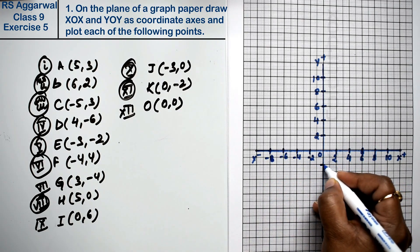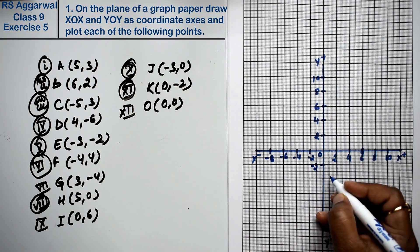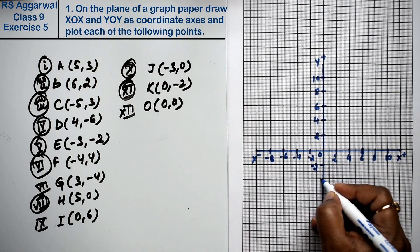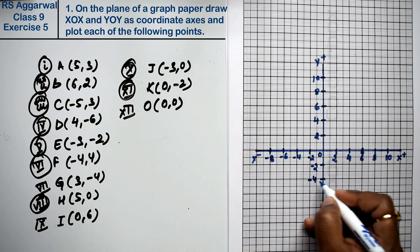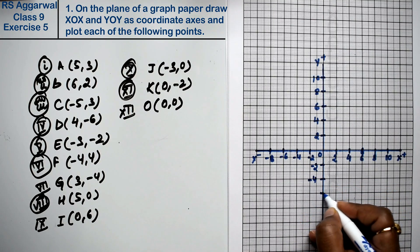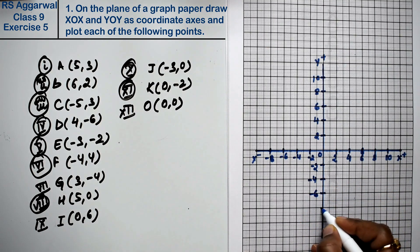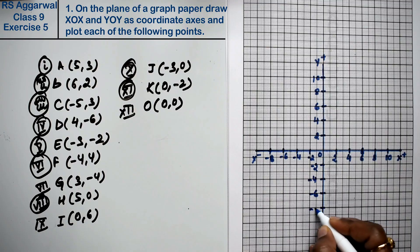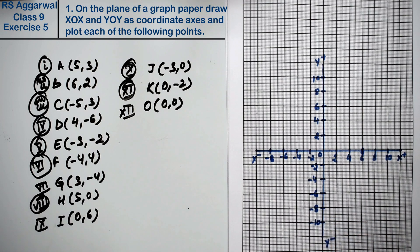Similarly, on the negative x-axis we mark: minus 2, minus 4, minus 6, minus 8, and minus 10. Now, how do we plot the coordinates?